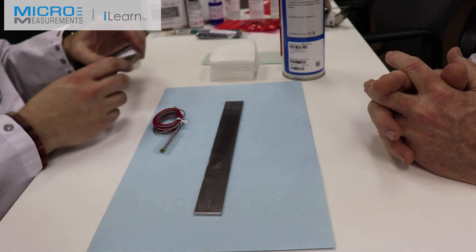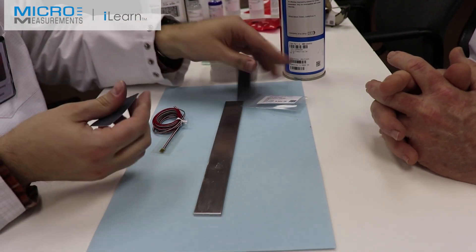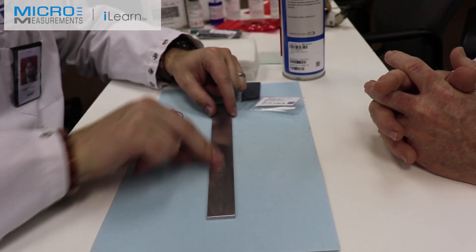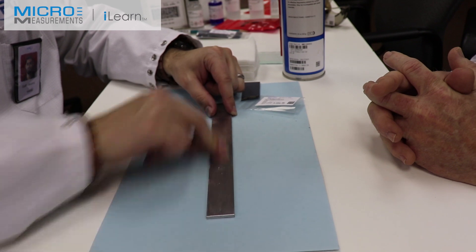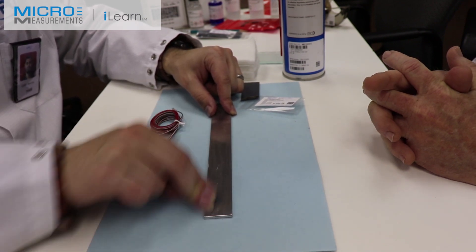Next step, he's going to dry abrade with the 320 grit silicon carbide abrasive paper, SCP-2. He's just going to dry abrade there in the location where the gauge is going to go. 10 or 12 strokes, not critical.